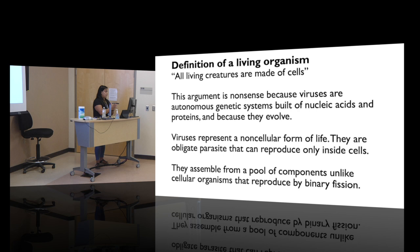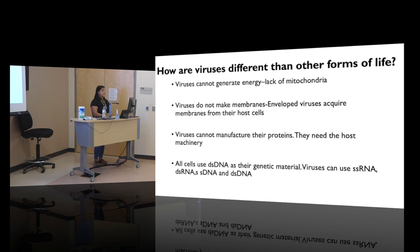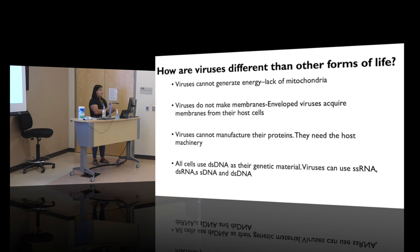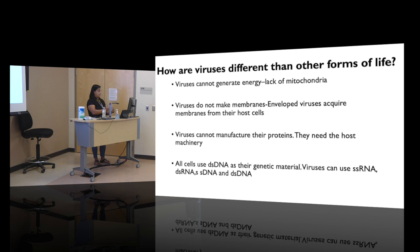Viruses cannot generate energy because they have no mitochondria. They do not make membranes on their own — they acquire, essentially stealing, the envelope from their host cells when needed. They cannot manufacture their own proteins but do code for them, relying on host machinery to do so. Genetically, viruses are extremely diverse: they can have single-stranded RNA, double-stranded RNA, single-stranded DNA, or double-stranded DNA — even more diversity than other cells.